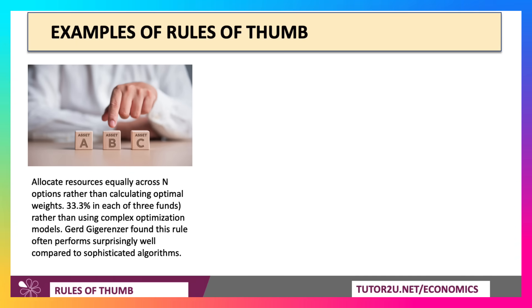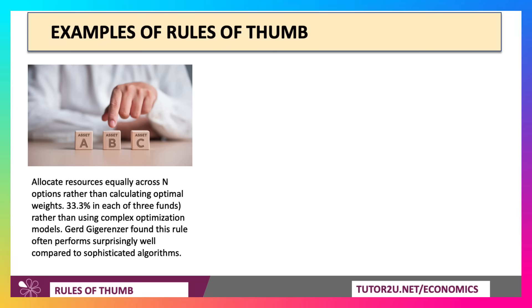is to just allocate money equally across N options, rather than calculating optimal weights. So if you have three funds — A, B and C, asset classes — just allocate 33.3% each, rather than engaging in complex optimisation models. The famous psychologist and economist Gerd Gigerenzen from the Max Planck Institute, who has done a lot of work on heuristic thinking, found that this 'divide equally across N options' rule performed surprisingly well compared to sophisticated algorithms.